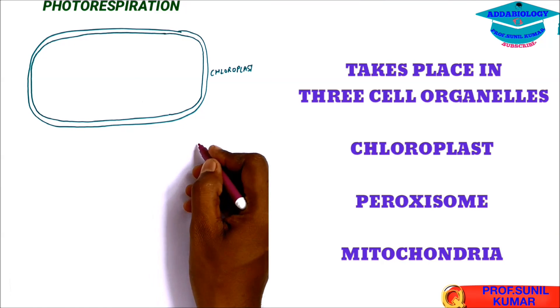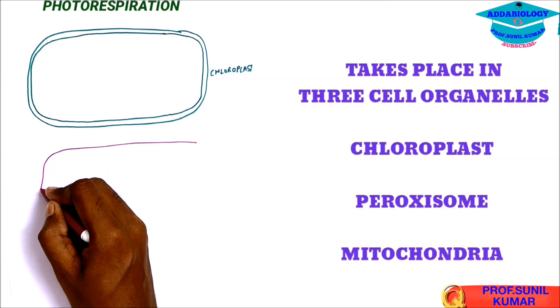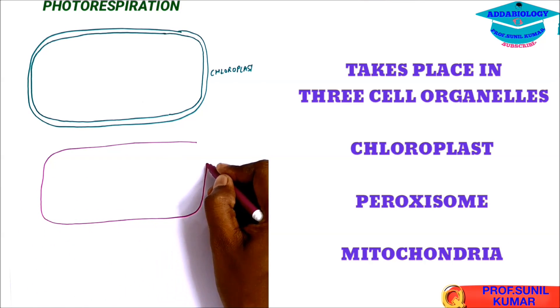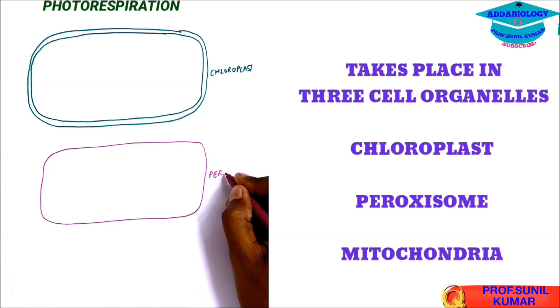Second cell organelle we draw is peroxisome. Now we need to draw it in a single membrane because peroxisome is a single membrane structure.